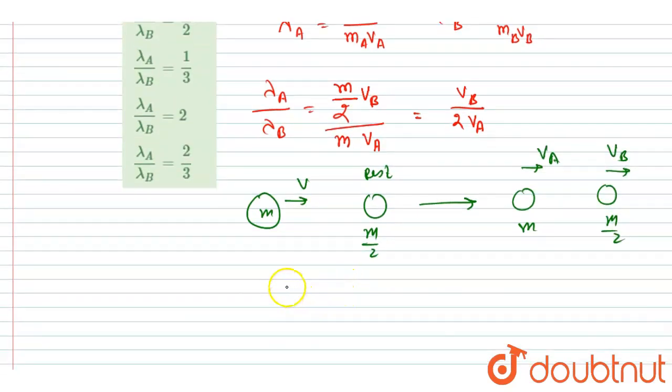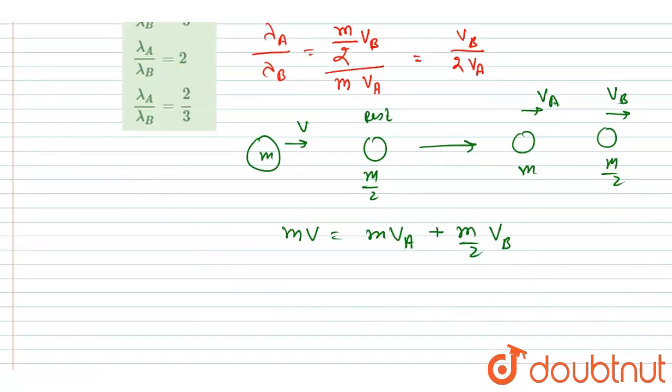So I will write mv equals mvA plus m/2 vB. Now if I apply elasticity formula, so I will write e equals velocity of separation after the collision, that is vB minus vA, and velocity of approach before the collision that is v. And since the collision is elastic, so